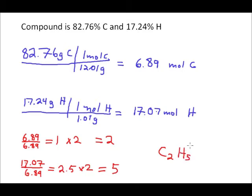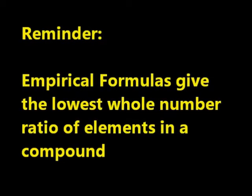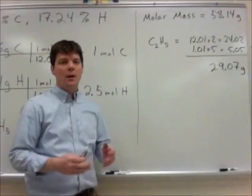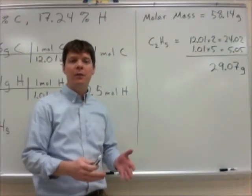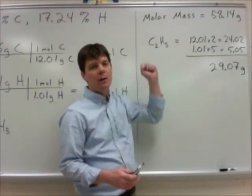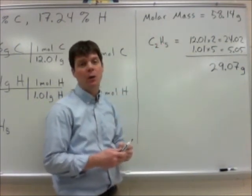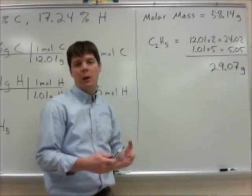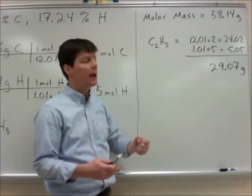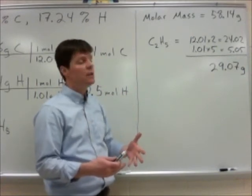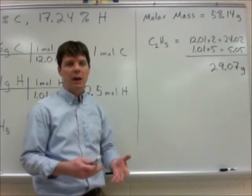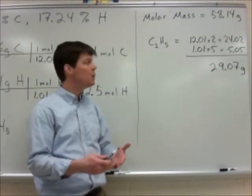And that's how we determined the empirical formula for this hydrocarbon, which is 82.76% carbon and 17.24% hydrogen. And those percentages are, of course, percentages by mass. The next step of this problem is to use the combined information of molar mass. We know that this compound in the problem had a molar mass of 58.14 grams. We'll pair that up with the information that we can find from the empirical formula. We just figured out the empirical formula for this compound was C2H5.